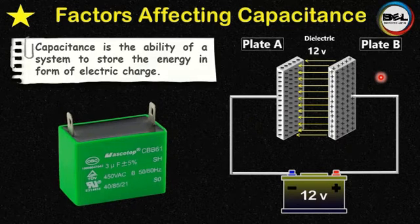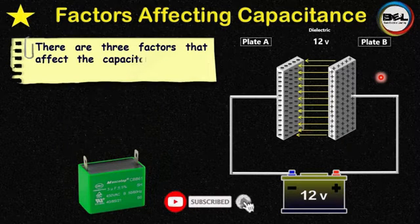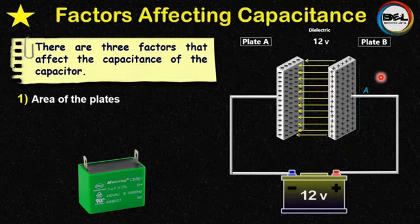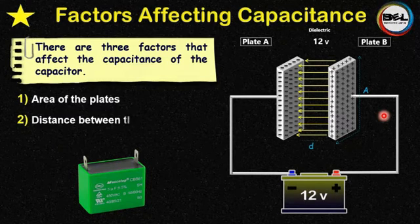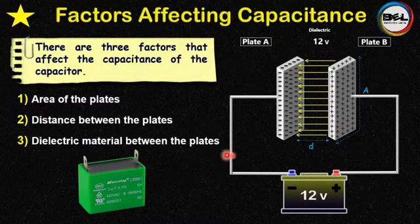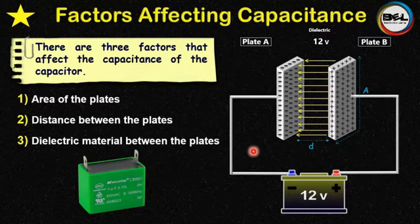Now let's see the factors affecting the capacitance. Three factors affect the capacitance of a capacitor. The first one is the area of the plates. The second one is the distance between the plates. And the third one is the dielectric material between the plates. So there are three main parts of a capacitor: two plates and the dielectric material.